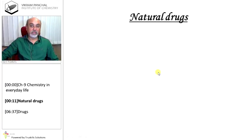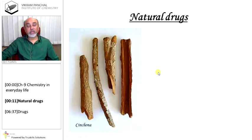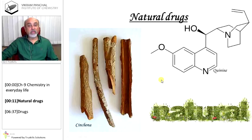Natural Drugs. India is a country of natural sources, and therefore we are using many natural drugs — herbs, plants, and many things available from plants and trees. As India is a tropical country, a major issue is diseases which occur only in tropical regions, like malaria.